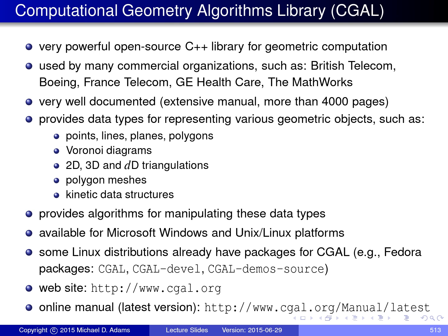The last time I checked, it was more than 4000 pages and it's probably grown much beyond that by now. It provides data types for representing many different types of geometric objects, including points, lines, planes, polygons, Voronoi diagrams, 2D, 3D, and n-dimensional triangulations, polygon meshes, kinetic data structures, and many other geometric types. In addition to providing representations for these types, it also provides many different algorithms for manipulating these data types.